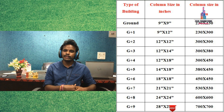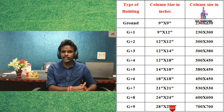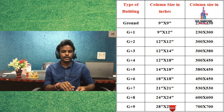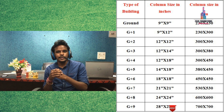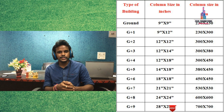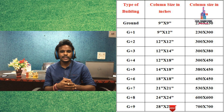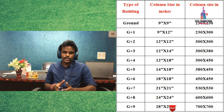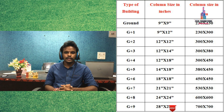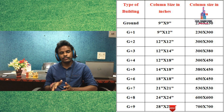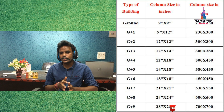For a G+5 building, the column size is 14 inches cross 18 inches, approximately equal to 380 mm cross 450 mm. For a G+6 building, the column size is 18 inches cross 18 inches, which is approximately equal to 450 mm cross 450 mm.